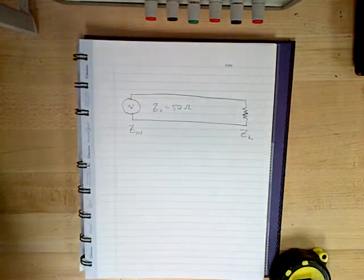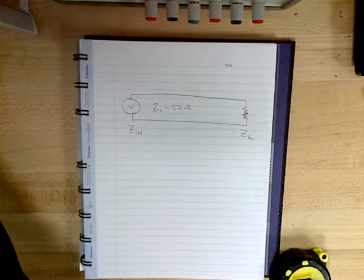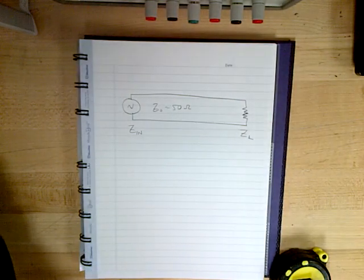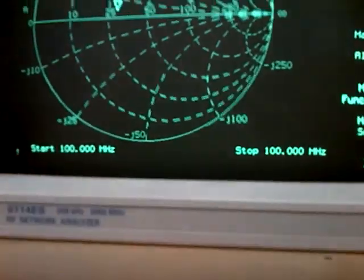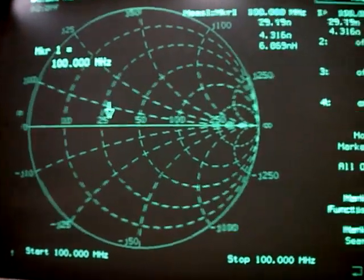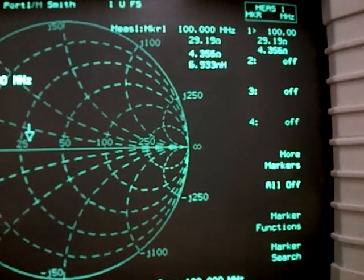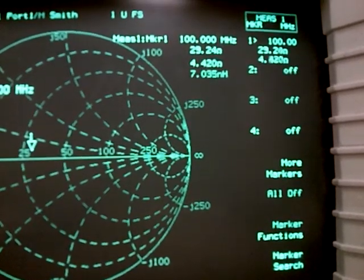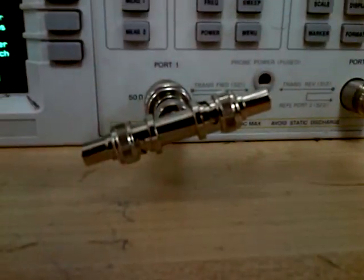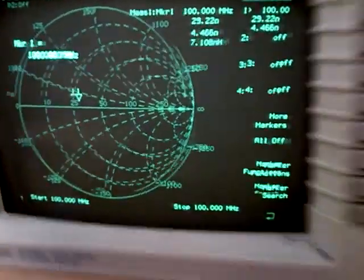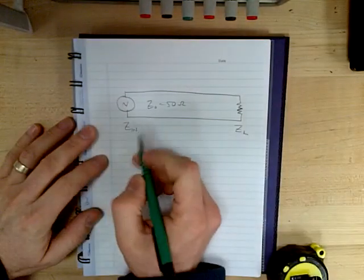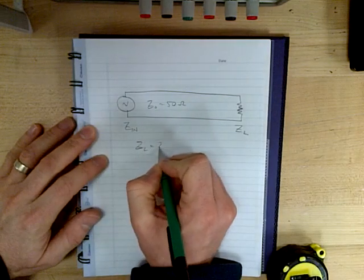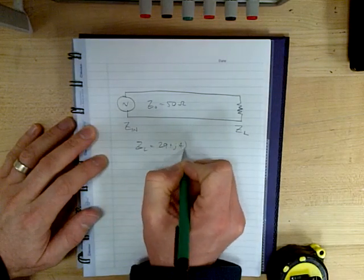So if I use the network analyzer and I connect my load here, then I can measure what the impedance is. That's the impedance. So up there it says 29 plus J4.4. So I can say load impedance is equal to 29 plus J4 ohms.